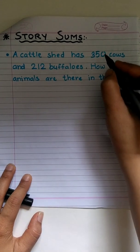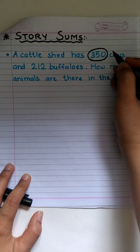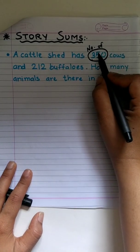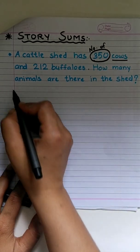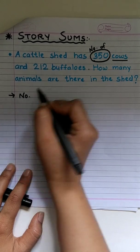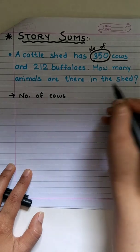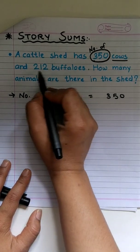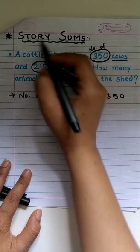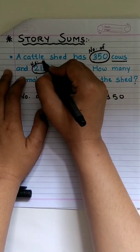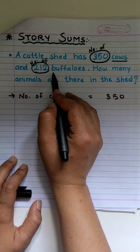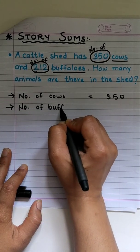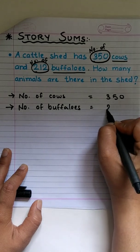I am going to give you an easy trick through which you can write the correct statements. Ok? Observe. Circle the number and write number of at its place. Ok? So, number of what? Cows. So, our first statement will be number, number of cows, which were 350. Now, where is the second number? Yeah, circle it. Again, at its place we will write number of. Number of what? Buffaloes. So, our second statement says number of buffaloes. Now, how many buffaloes do we have? 220.